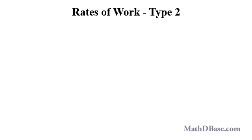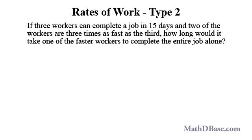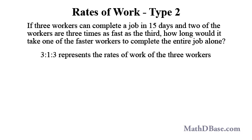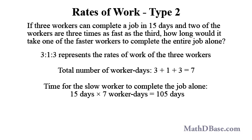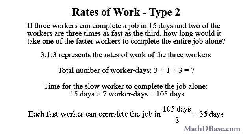Now let's look at some examples of the second type. If three workers can complete a job in 15 days, and two of the workers are three times as fast as the third, how long would it take one of the faster workers to complete the entire job alone? Let the slow worker have the base rate of 1. Then all three workers' rates are represented by the ratio 3 to 1 to 3. Three plus one plus three, or seven, represents worker days based on the slowest worker's rate. Fifteen days times seven worker days equals 105 days — the time for the slow worker alone. Each faster worker is three times as fast, so it would take 105 divided by 3, or 35 days, for one faster worker to complete the job.